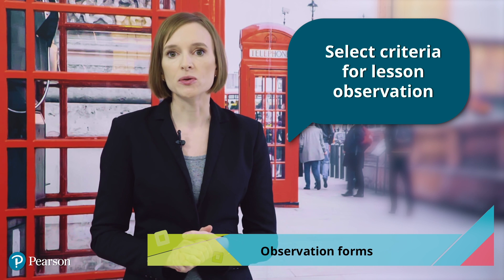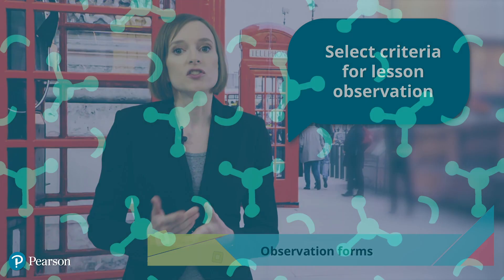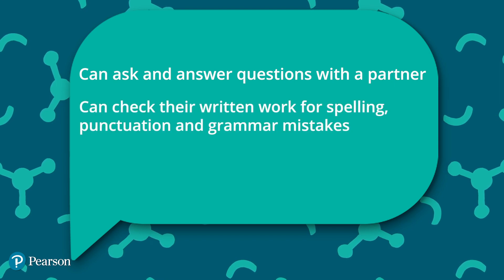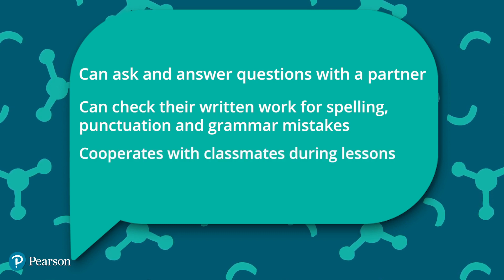The criteria are up to you and will depend on your lesson aims, but some examples might be: the student can ask and answer questions with a partner; the student can check their written work for spelling, punctuation and grammar mistakes; or the student cooperates with classmates during lessons. Alternatively, you could have a longer list of criteria and choose one or two students to observe each lesson, ticking off the things they achieve.